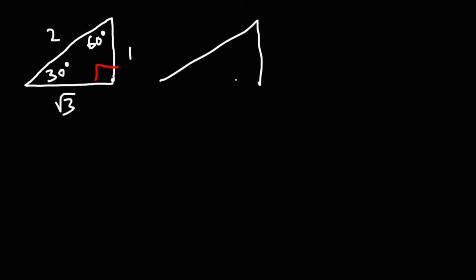The second triangle you need to be familiar with is the 45-45-90 triangle. Across the 45 degree angles the sides are equal to 1, and across the 90 degree angle it's the square root of 2.